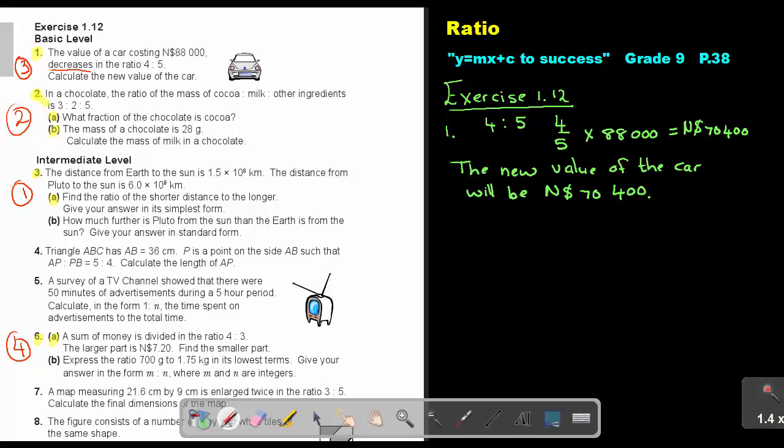Let's look at number two. Let's start with 2A. See, in a chocolate, the ratio of mass of cocoa, milk, and other ingredients is 3 to 2 to 5. Let's write it down. 3 to 2 to 5. Now, as they name it, the first one is cocoa, so then 3 is cocoa. The second one, milk, then this is milk. Then other ingredients, then this is O.